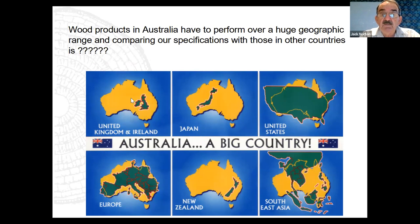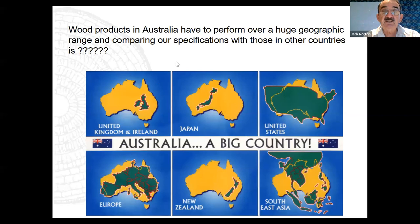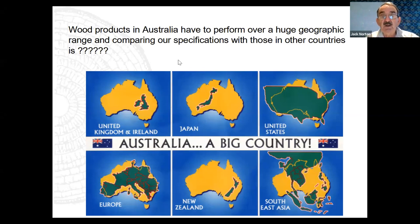A lot of people in this country don't realise how Australia compares to other countries. We're a big country and we expect wood to perform in an awful lot of different environments. The environment in Tasmania is not the same as in Mount Isa or Innisfail. We have one set of specifications for the whole country and expect wood to perform in all of them. A lot of criticisms I hear say 'we don't do this in the US or Europe' — well, Australia has its own special set of conditions.